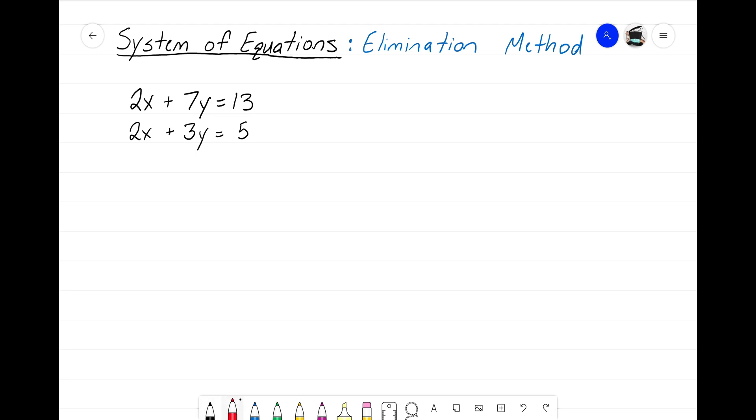Now, remembering from my last video, the biggest step, the major step for the elimination method is to combine both of those equations. And we do that by adding them together. We put a plus sign, we put a big equal sign underneath, and we add them together, hoping that one of the variables will drop out.